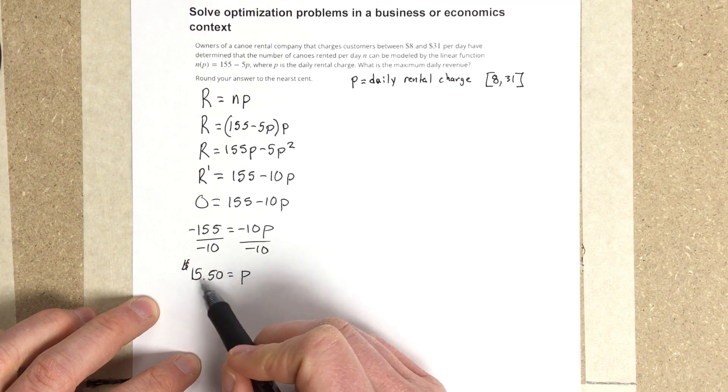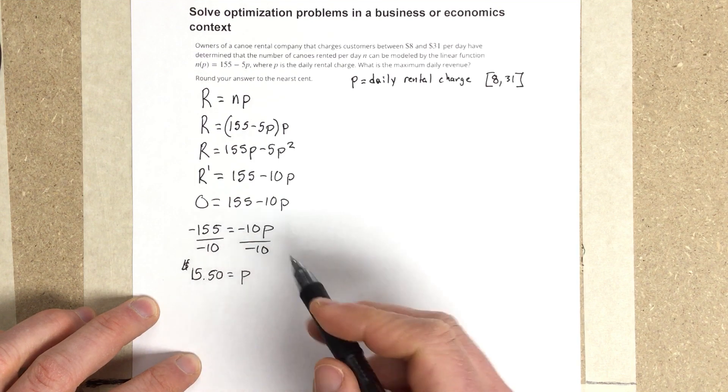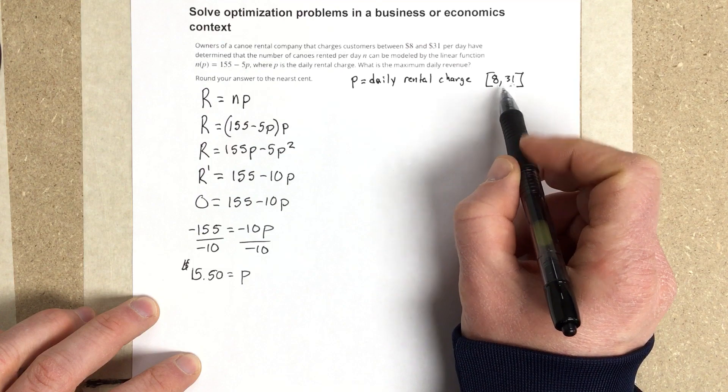this price would be the maximum price that we would charge to maximize our revenue. However, we still need to test the endpoints to make sure that that's true.